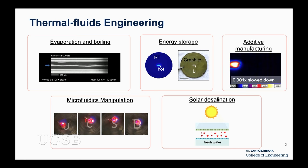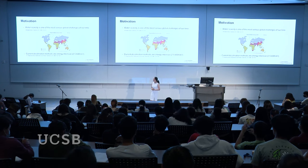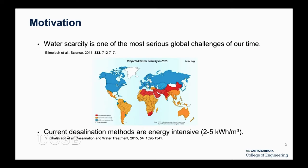Today I will share our work on solar thermal desalination. Why do we work on this? In California, water scarcity is a big problem — though not this year with all the rain. Looking at the entire world, water scarcity is one of the most serious global challenges of our time, especially in developing countries. We really need scalable, low-cost, economic ways to provide people with fresh water.